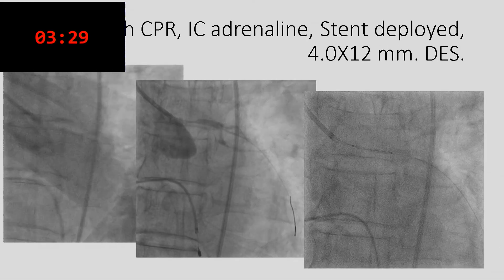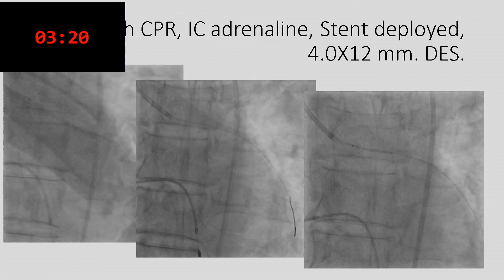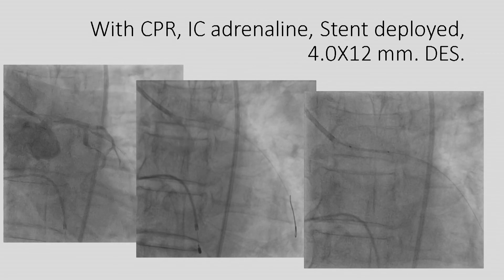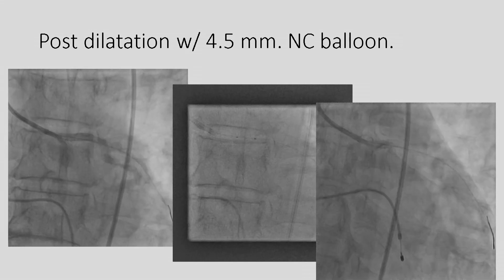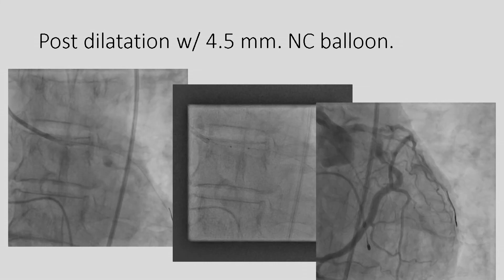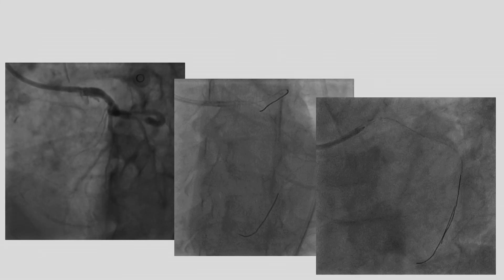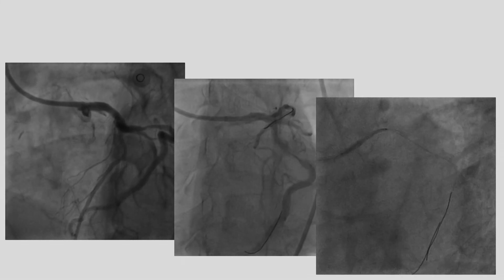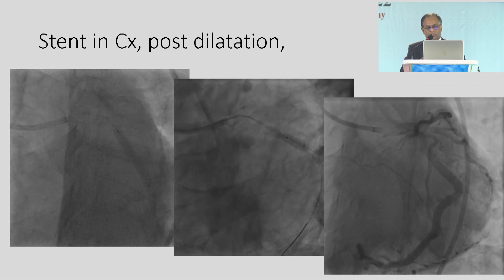With CPR ongoing, intracoronary adrenaline was given and a 4×12 mm DES was deployed. The heart was barely moving. Our senior anesthetist intubated the patient. After post-dilation with a 4.5 mm NC balloon, the heart started contracting. I kept the LCX stenting result as it was. The patient survived. Before discharging the patient, I did elective LCX stenting — a 4 mm stent, 4×24 mm — with the help of a buddy wire, with post-dilation. The patient was discharged after five to seven days.